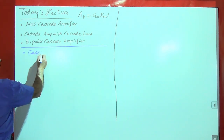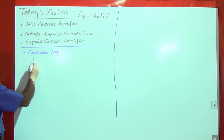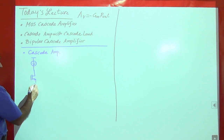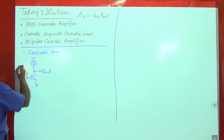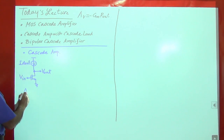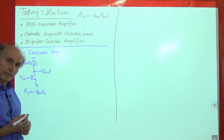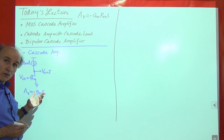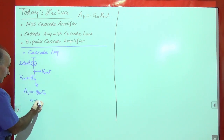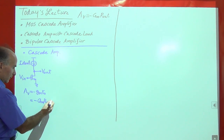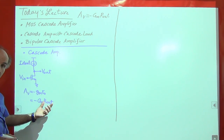We start with a simple common source stage from Electronics 1. The voltage gain of that circuit, with an ideal current source load, is just minus GM·RO — the intrinsic gain of the transistor — maybe a value of 10 or so. We would like a higher gain. We can write this as minus GM·RO, and ask: can I increase RO?